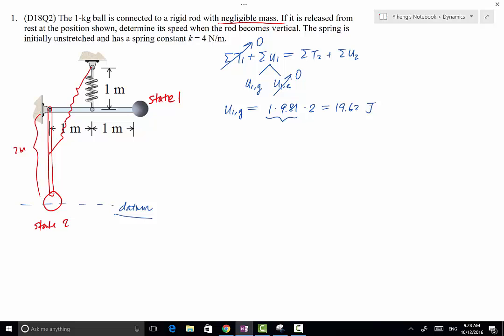And then for state 2, T2, we only need to consider the ball because the rod has negligible mass. So T2 of the ball equals to 1 half mv squared.